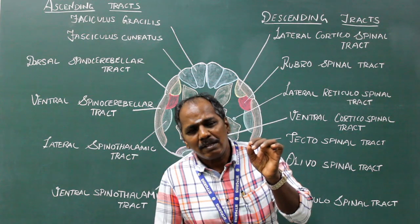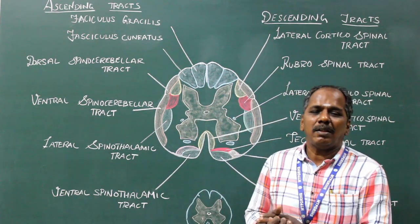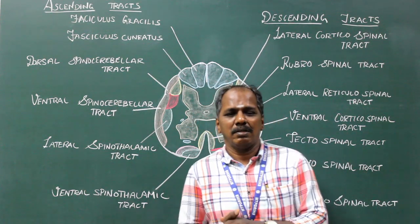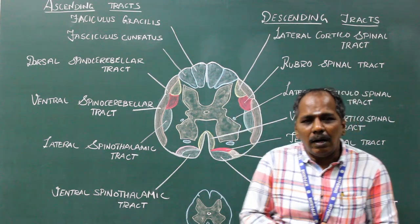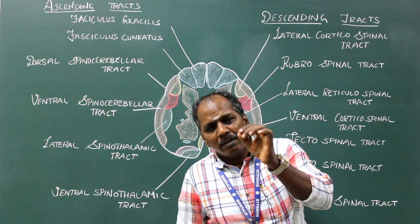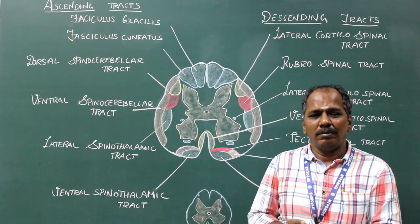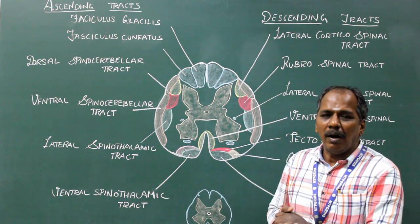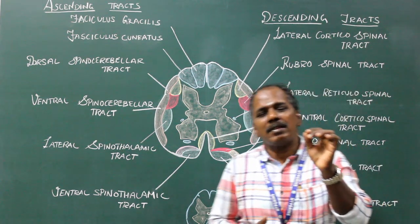Some of the tracts are termed as fasciculi, that is bundles, or lemnisci, that is ribbons. The tracts are named after the names of two masses of grey matter connected by them. The first term represents the origin and the second term the termination of the tract.